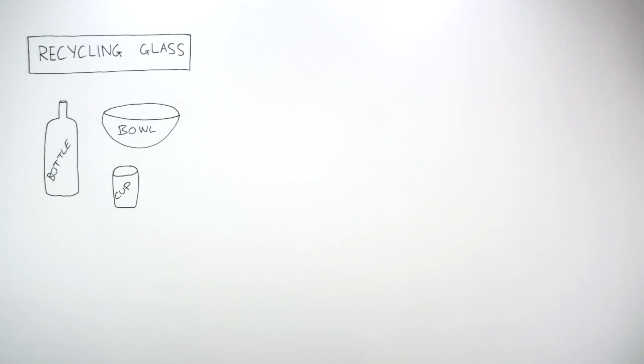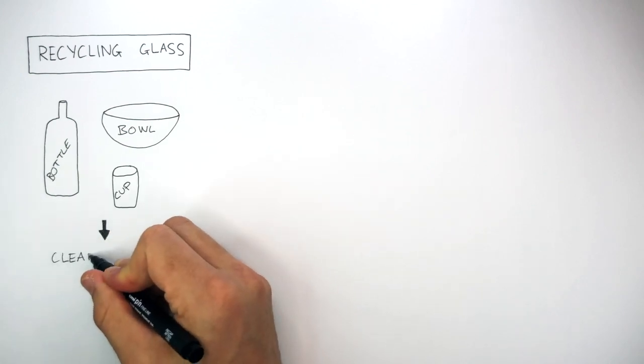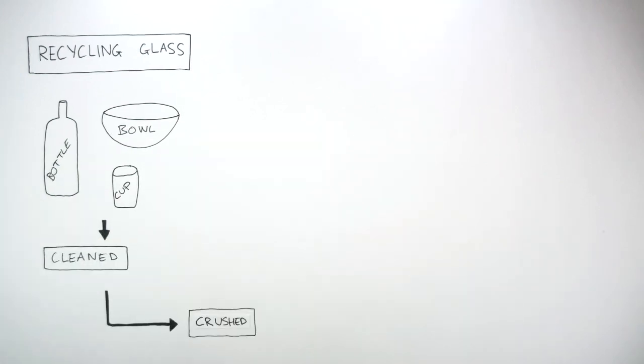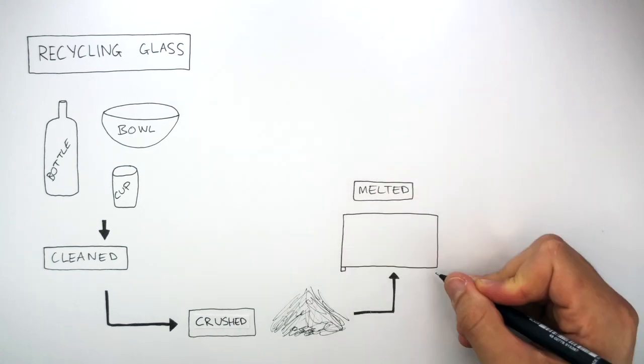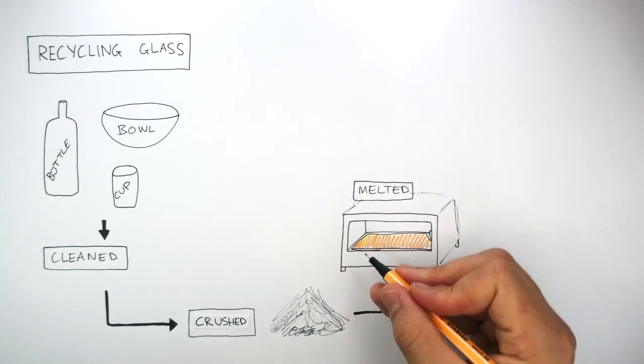So when it comes to recycling glass, we have our waste products. In this case, a bottle, a bowl and a cup. These waste products are first cleaned. They're then crushed, forming smaller pieces of glass. The next stage involves this crushed glass being melted in a blast furnace at very high temperatures.